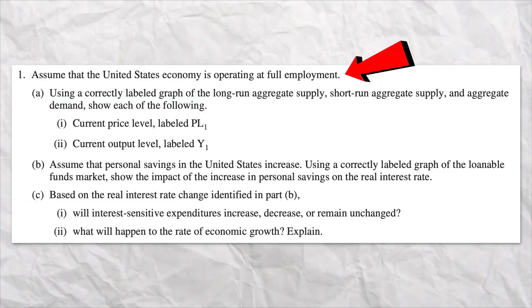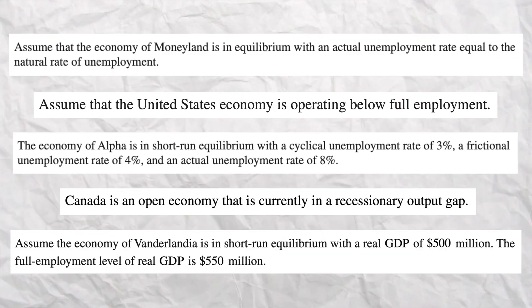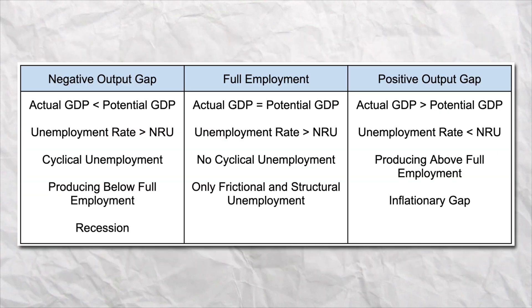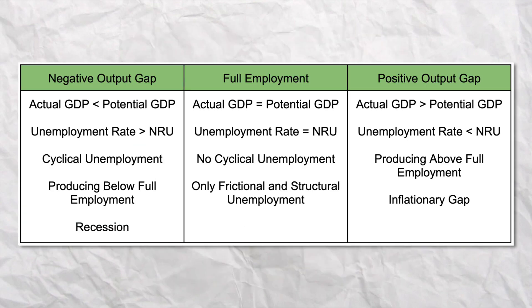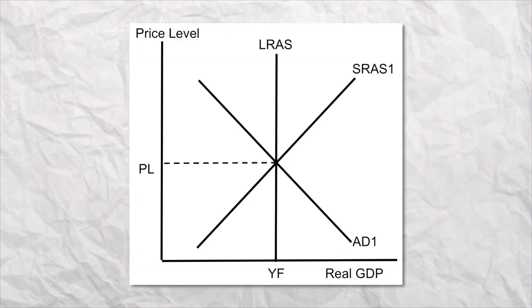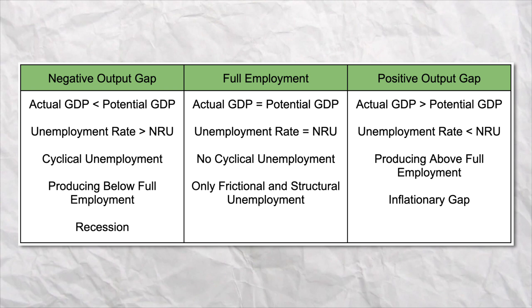Sometimes this is easy and they'll say draw an economy at full employment. But other times, the question might give you less obvious clues and you have to figure it out. For example, if a question says the actual GDP is less than the potential GDP, then the economy has a negative output gap. And if a question tells you the economy has no cyclical unemployment or only frictional and structural unemployment, then the economy is at full employment. Make sure you can decode those clues to figure out where the economy is to start.